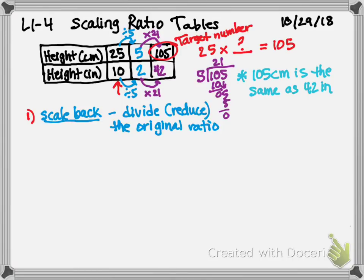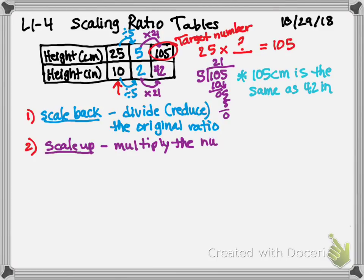Once I got to a number that worked with my target number, I ended up needing to go from 5 to 105 — I had to go up higher. That's when I scale up. When I scale up, I'm going to multiply the ratio. Sometimes I start with scaling up, and sometimes I scale back and then scale up, or scale up and then scale back — it goes all sorts of directions. The goal is to multiply the ratio by a value that ends with the target number.